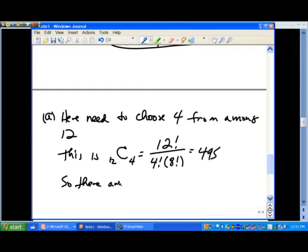So that's 495 we get. So there are 495 ways to simply get a subcommittee of four in any combination of gender.